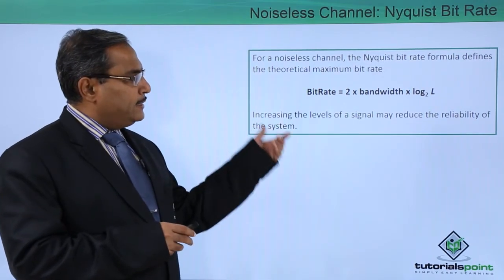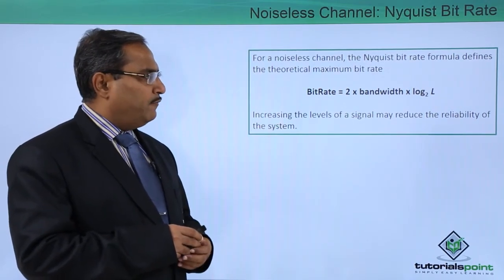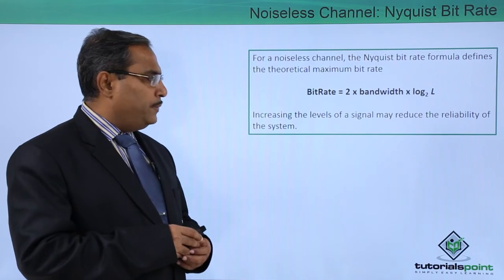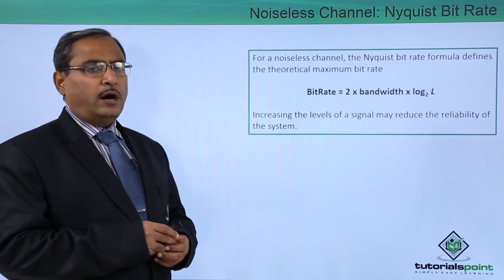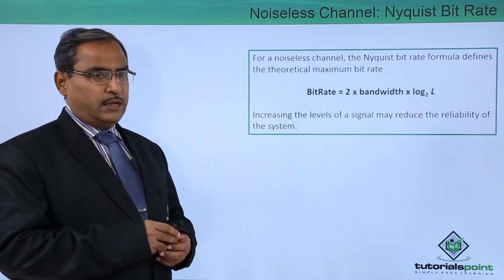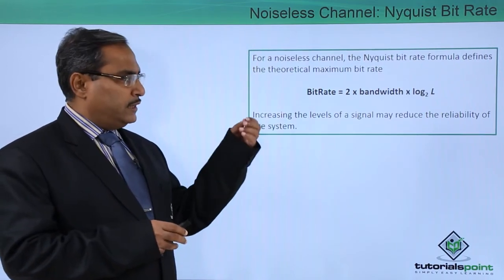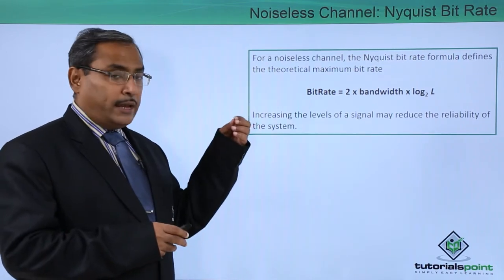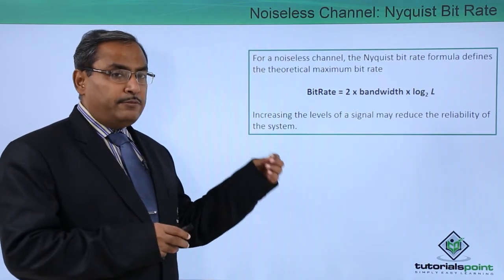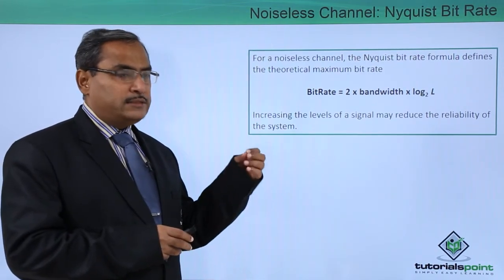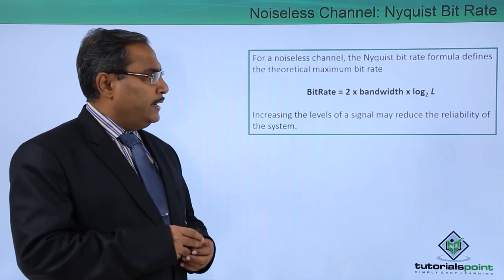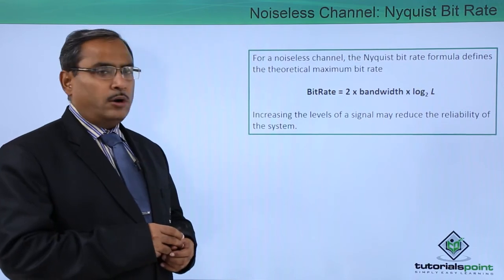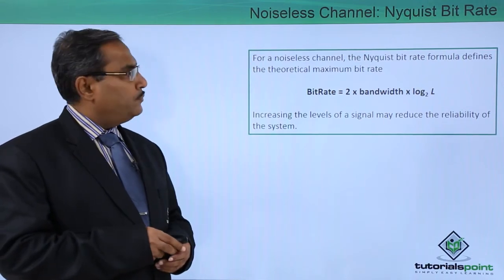Increasing the number of signal levels may reduce the reliability of the system, so L should have some upper bound. To calculate the bit rate in a noiseless channel, the formula is 2 × Bandwidth × log₂(L).